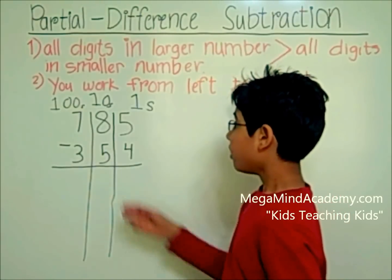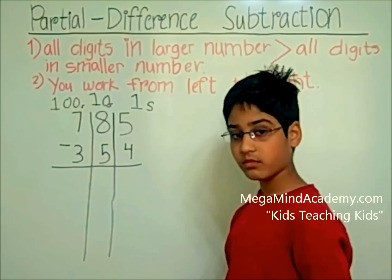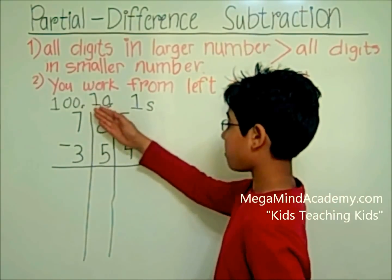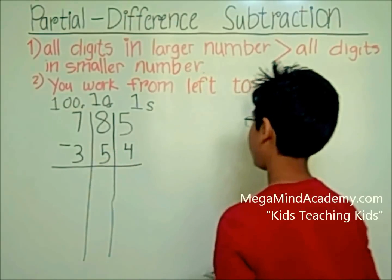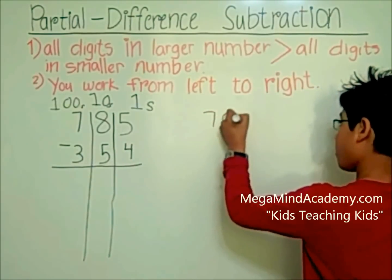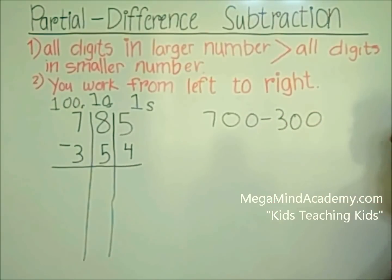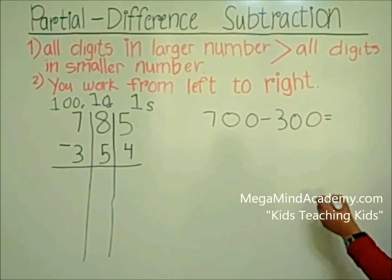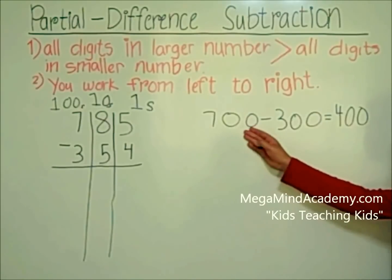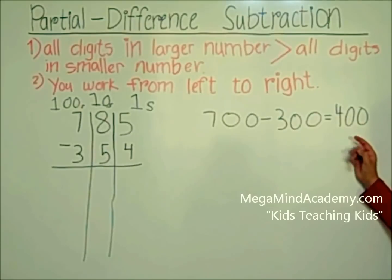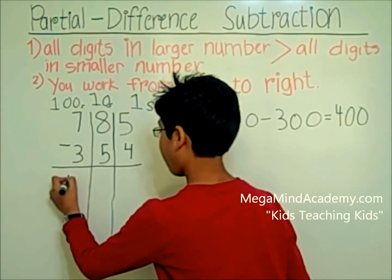The digits on the leftmost side are 7 and 3. So we compute 700 minus 300, which equals 400. Let's write down this partial difference: 400.